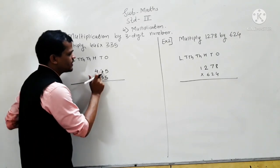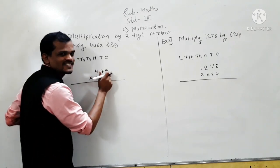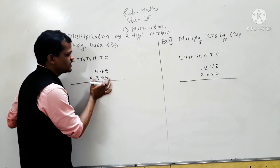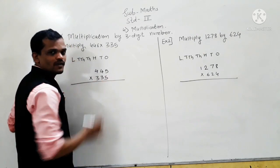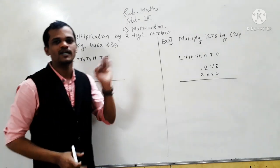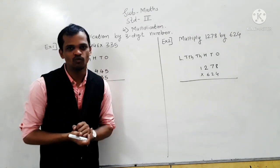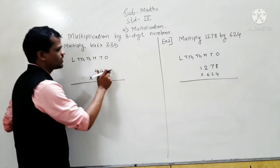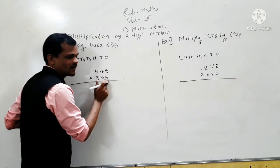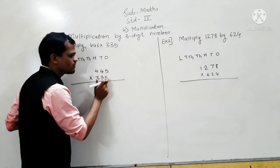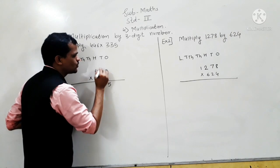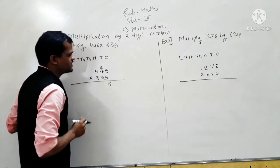Here, 445 is the multiplicand. In this example, 3 multiplications are involved. Let's start: 445 multiplied by this 5. So, 5 fives are 25 — write 5 here and carry 2 to the tens place.